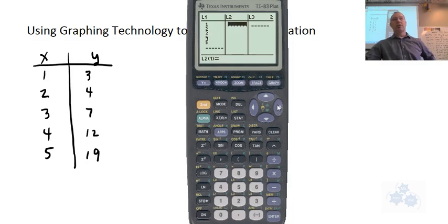Now cursor over to the right just to get up to list two there. And then start entering these numbers as well. So three, enter, four, and so on. Seven, twelve, and nineteen.